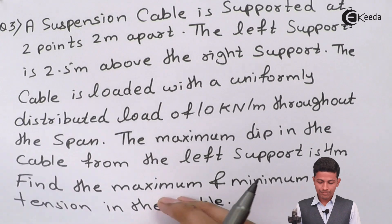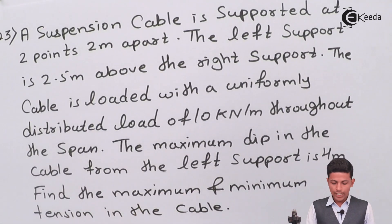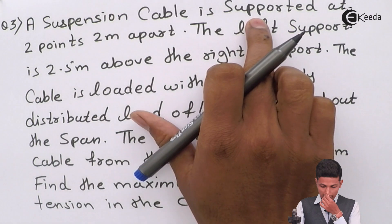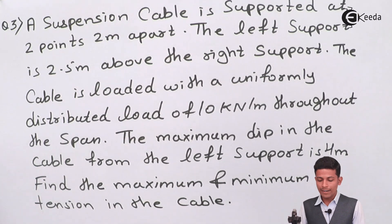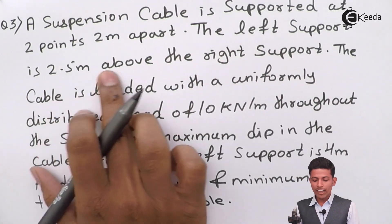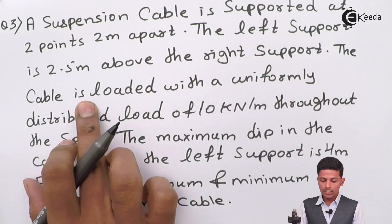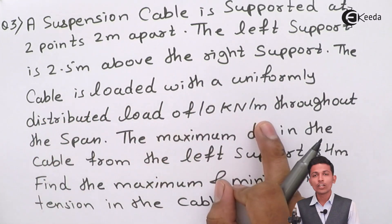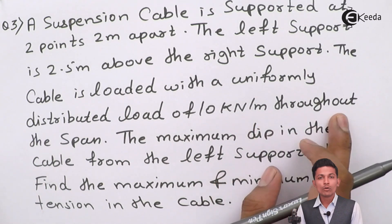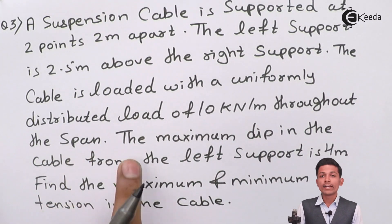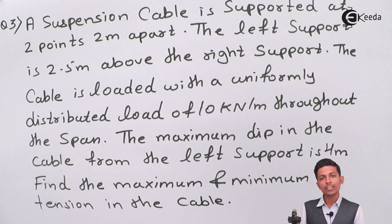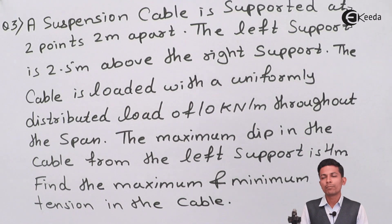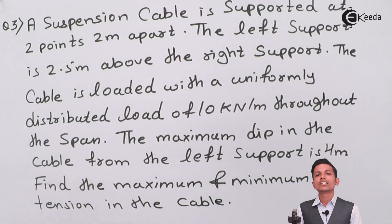The question given is: a suspension cable is supported at 2 points, 25 meters apart. The left support is 2.5 meters above the right support. The cable is loaded with a uniformly distributed load of 10 kN/m throughout the span. The maximum dip in the cable from the left support is 4 meters. Find the maximum and minimum tension in the cable. This type of problem comes in exams for 8 to 10 marks or 5 marks.